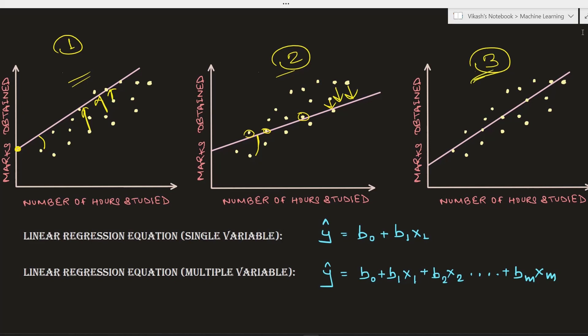However, the performance can still be improved a bit. Finally, in the third attempt, we readjust the value of b0 and b1, and it looks like we have now achieved the best values for b0 and b1 in order to draw the best fit line, and it is doing really well in terms of prediction.